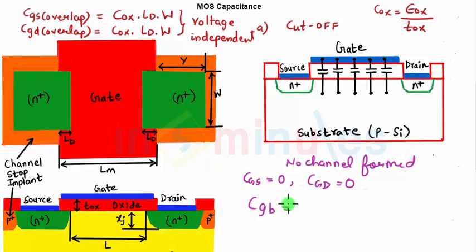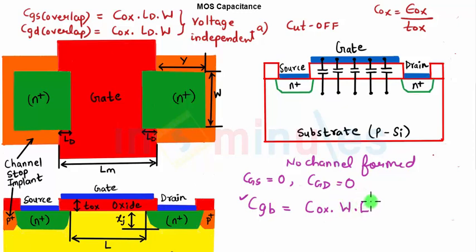CGB is present in the cutoff region because there is no channel, so the SiO2 capacitance exists directly between the gate and the substrate. CGB is COX × W × L, where W is the width and L is the length of the channel. So in the cutoff region, since no channel is formed, source and drain see no capacitance (CGS = CGD = 0), while the gate-to-body capacitance equals COX × W × L.